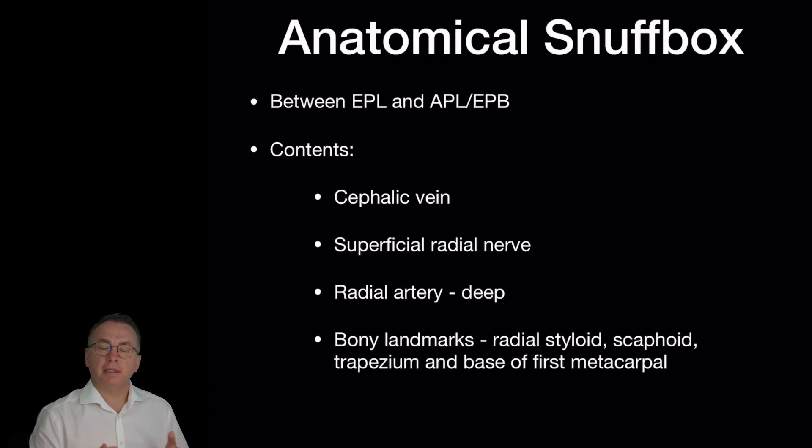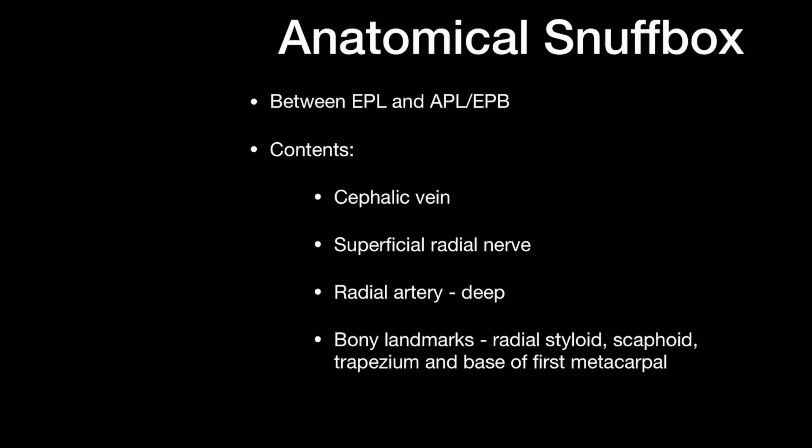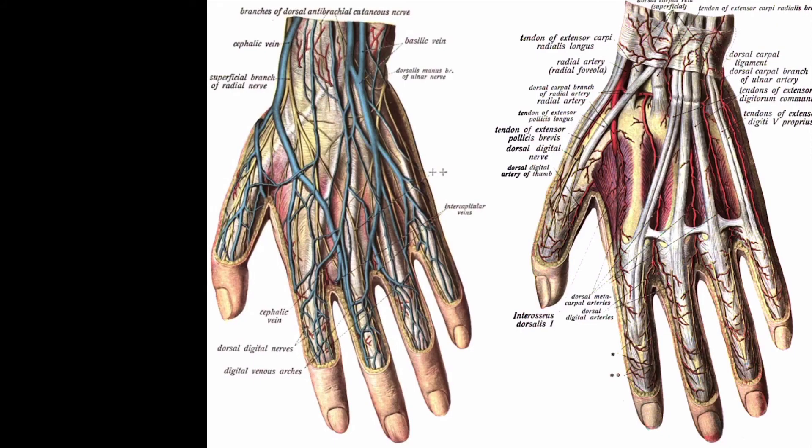One further thing to discuss if we're discussing extensors is the anatomical snuff box. This anatomical feature is located on the radial side of the wrist, towards the base of the thumb. The snuff box is between the extensor pollicis longus and the APL-EPB tendons. We can see that position here, extensor pollicis longus, APL-EPB.